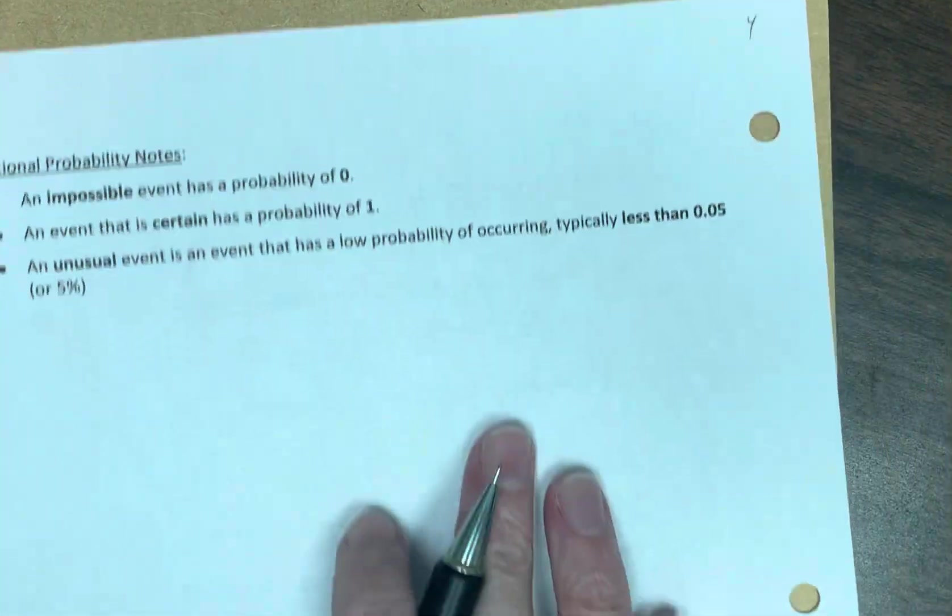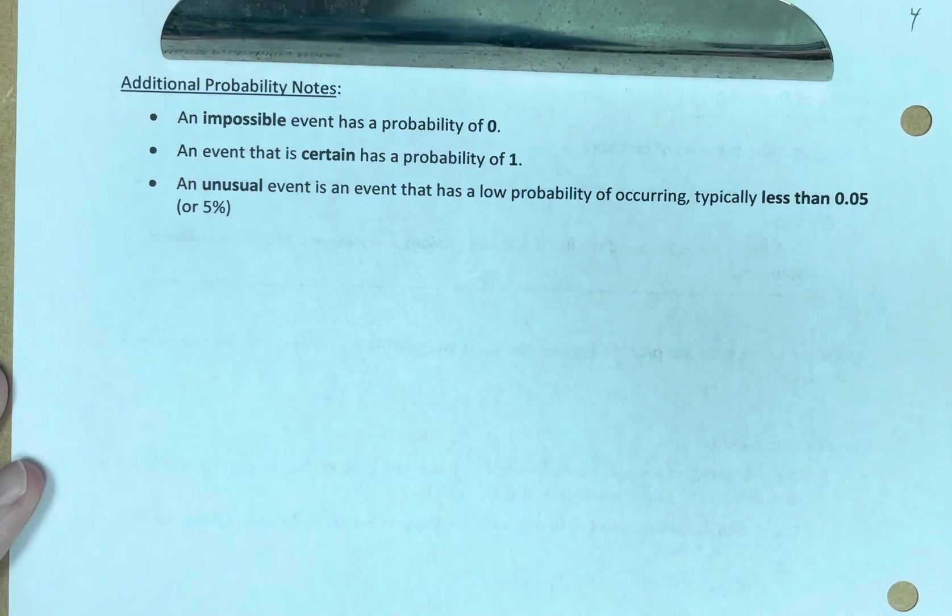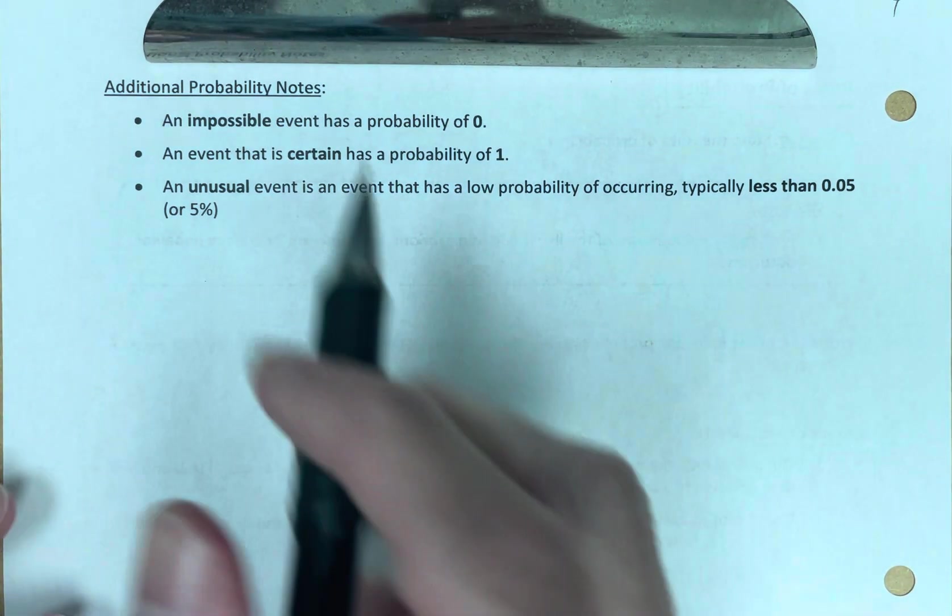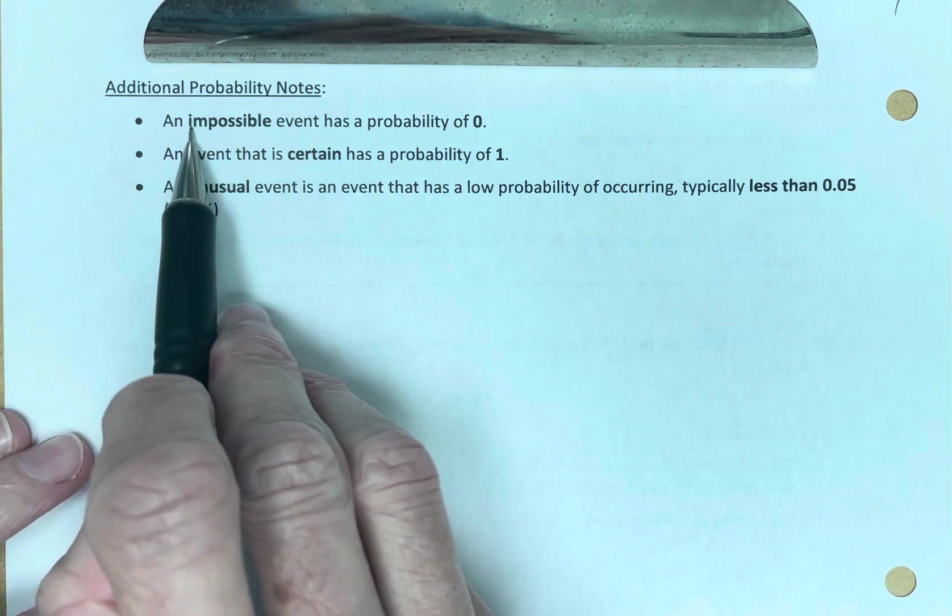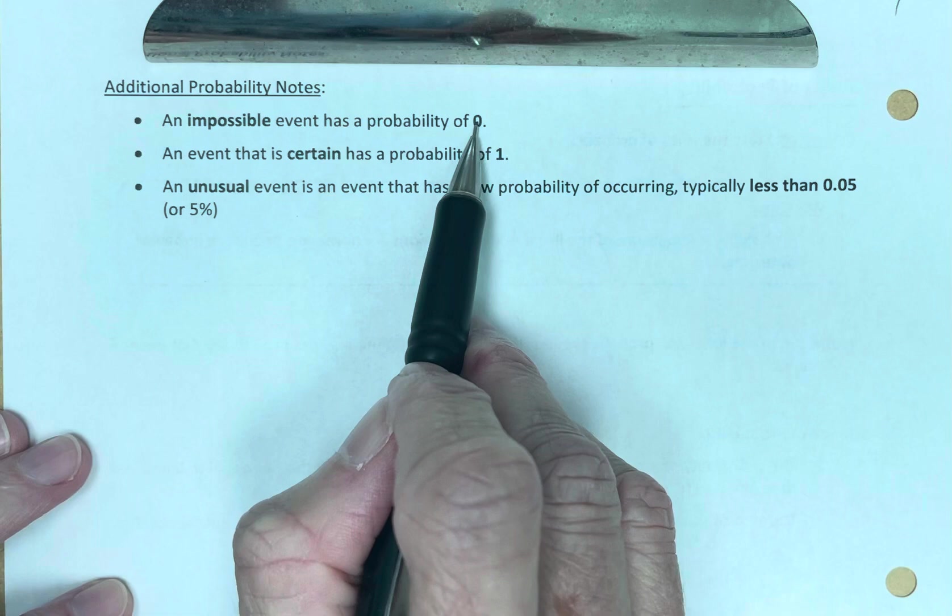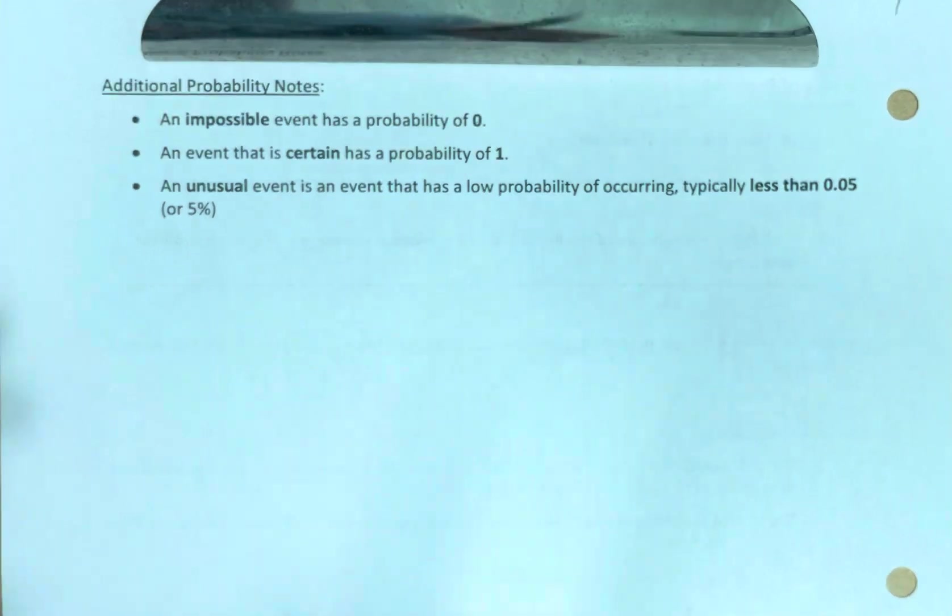One more thing to mention here. A couple additional probability notes that we want to keep in our toolbox. Additional notes. An impossible probability has a probability of zero. I spoke to this earlier. If the probability of an event happening is zero, then it's impossible.